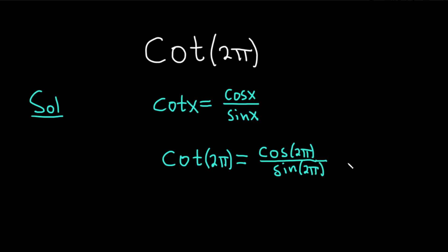That would be equal to the cosine of 2π divided by the sine of 2π. The cosine of 2π is going to be 1, the sine of 2π is going to be 0. So we get 1 over 0.